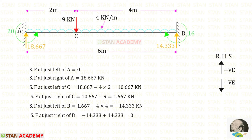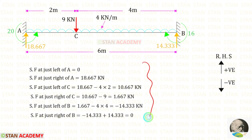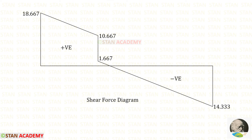Now we are going to draw the shear force diagram. Shear force values are found from point A towards point B, following the right-hand-side rule where upwards is positive and downwards is negative. The calculations and the resulting shear force diagram are shown here.